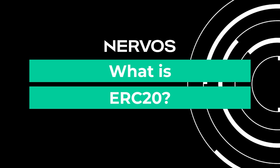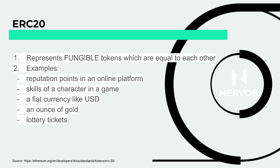So now let's talk about what ERC20 is. ERC20 is a way of representing fungible tokens — tokens that are equal to each other. This is perfect for a currency in your game. For example, if you have gold, each coin is always equal to one gold that another player might have. It could also be reputation points, because reputation points are equal to each other and have exactly the same value. This is when you use ERC20, and it's the most popular standard in Ethereum.